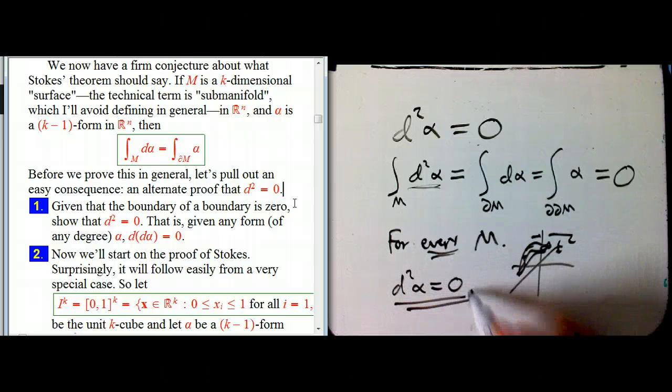It's not too hard to convince yourself that the only possible way that could be true is if this form, d squared alpha, is identically the zero form. There's no place where it's non-zero. Because the job of this guy is to be integrated over things, and it's always giving zero. The only thing that's going to do that is zero.